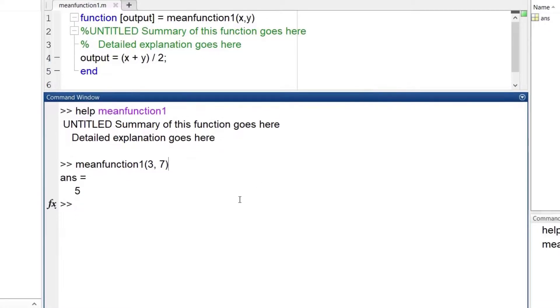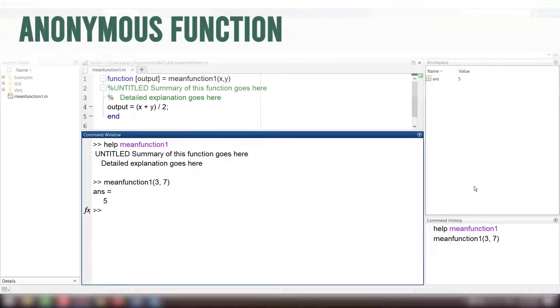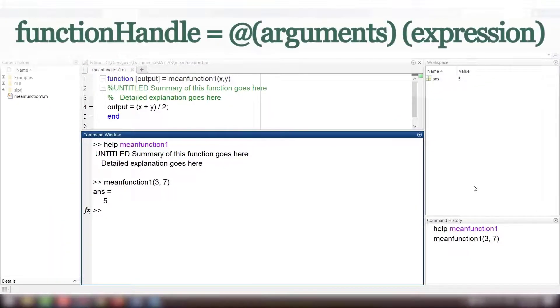There are two other ways to define a function. These are simpler ways which can only be used in case of simple functions. Anonymous function: the general syntax is functionHandle = @(arguments)(expression).